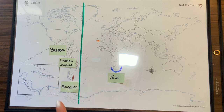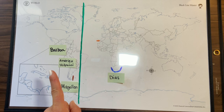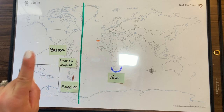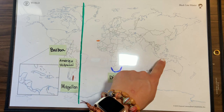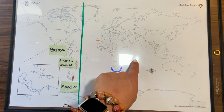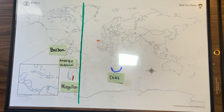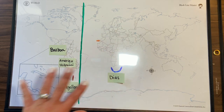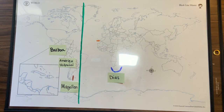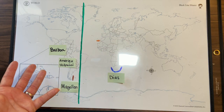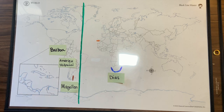After Magellan's death, two ships continue westward. One survives to reach the Indian Ocean, sails around the tip of Africa, and completes the voyage back to Spain. They started with five ships, lost four along the way, and Magellan himself didn't survive. But it was his fleet that completed the first voyage around the globe.